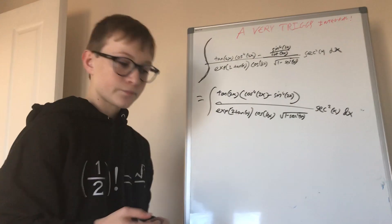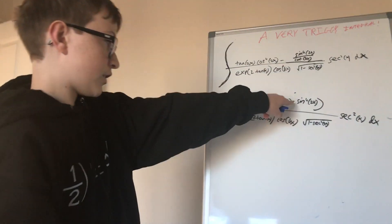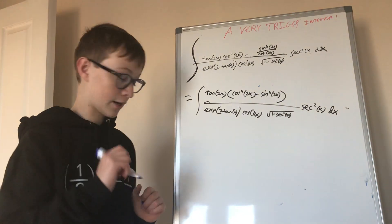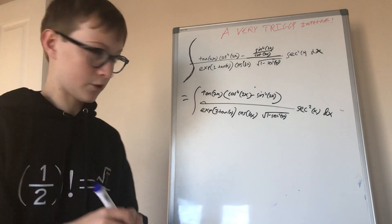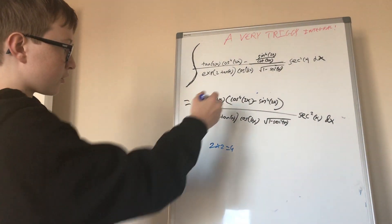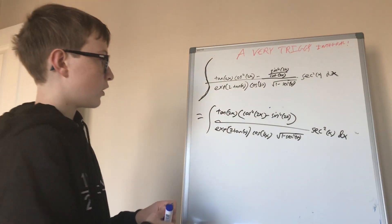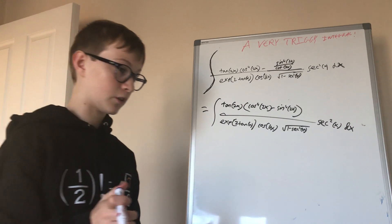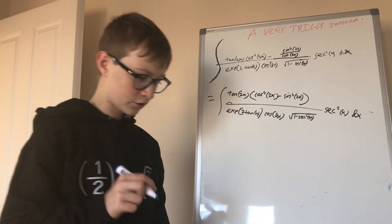Now, what's the next step? Simplifying cosine to the 4th power of 2x minus sine to the 4th power of 2x — that can be simplified. Let's just establish something: 2 times 2 equals 4. We want to make this a difference of two squares, because that we can write out in a nice way. Knowing that 2 times 2 is 4, we can actually make this a difference of two squares.